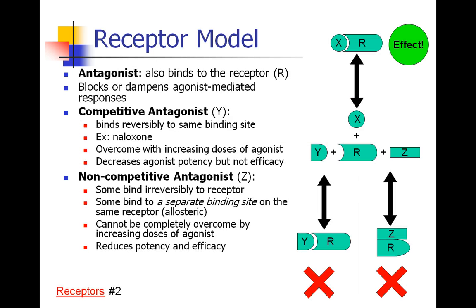Now this receptor model becomes a little more complicated because we don't just have agonists, but we also have antagonists. The antagonist also binds to the receptor but blocks or dampens the effect you're trying to achieve with your agonist. I'm going to talk about two specific kinds. First, a competitive antagonist — which binds to the same binding site as the agonist. For example, if fentanyl is binding to its pain receptor, naloxone could bind to the same site on the same receptor.